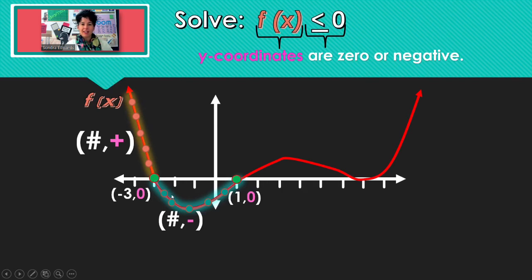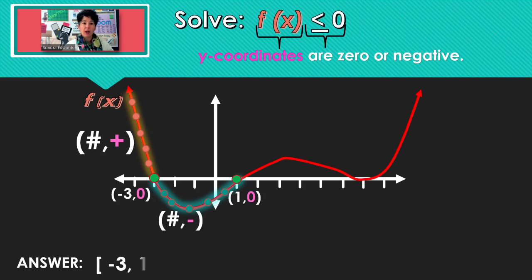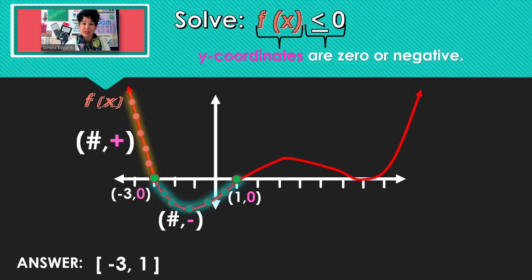So all of the x's from negative 3 through 1 are generating y-coordinates that are 0 or negative. I'm using brackets because we're including negative 3 and 1.